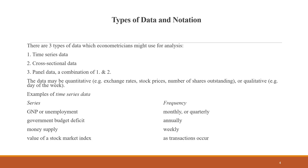There are two types of data which econometricians always deal with: time series data, cross-section data, and panel data. The data may be quantitative — such as exchange rate, stock price, or number of shares — or it may be qualitative, like the day of the week.